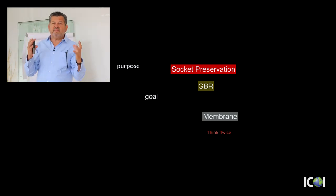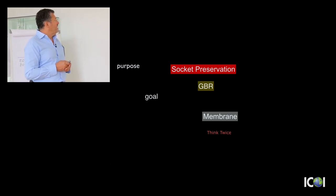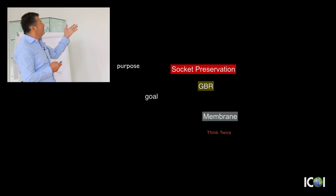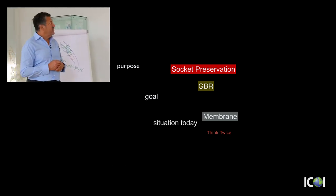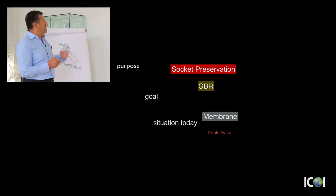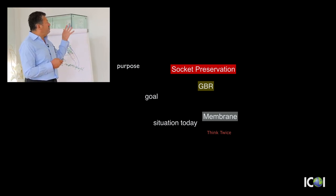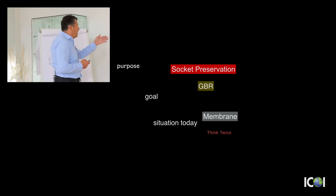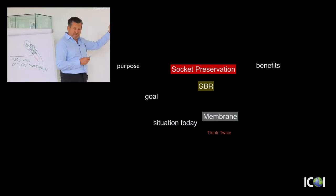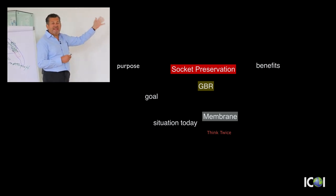There is a very big difference between socket preservation and guided bone regeneration. In socket preservation, the purpose is to maintain the volume. In GBR, the purpose is to increase the volume of a resorbed ridge. The goal in both is to place an implant, and today we can use these techniques predictably. We know which material to use and how to classify defects for socket preservation and GBR.